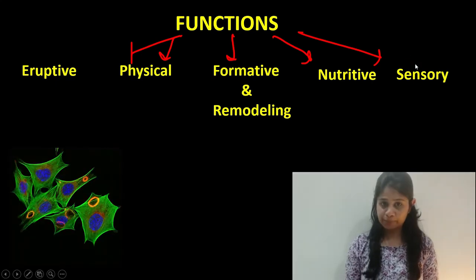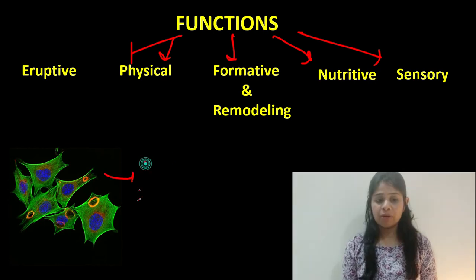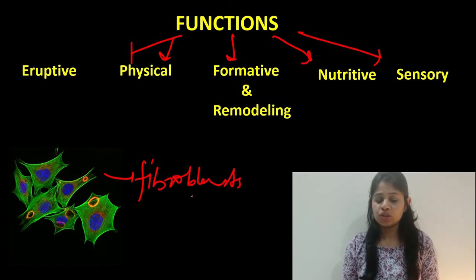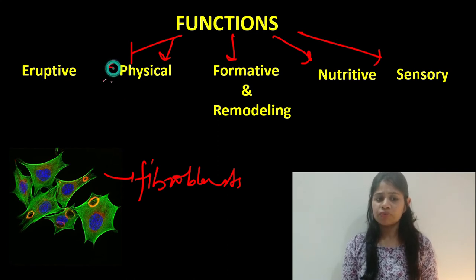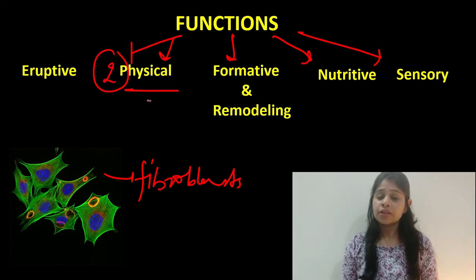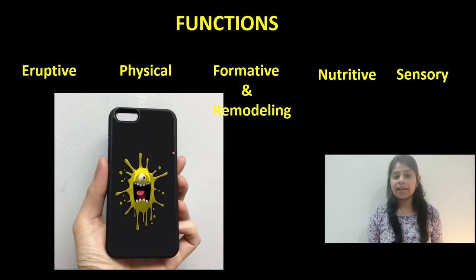First, the eruptive function — here we see the role of the ligament fibroblasts. Ligament fibroblasts play a very important role in active tooth eruption, and any changes in their shape and orientation will bring about changes in the way the tooth erupts into the oral cavity. The second and most important function is the physical function. The periodontal ligament forms a soft tissue casing that protects the underlying blood vessels and nerve supply from injury — comparable to the casing of a mobile phone protecting it from damage.